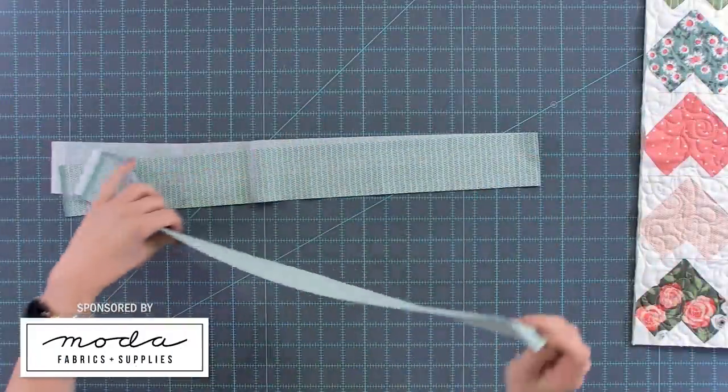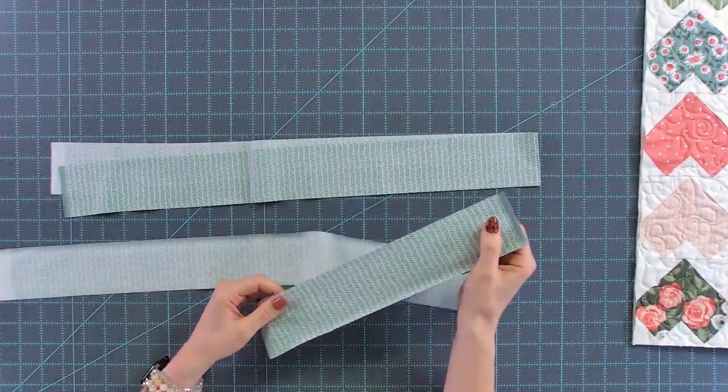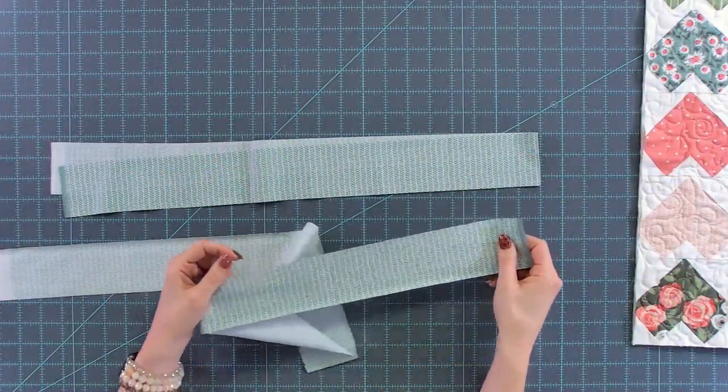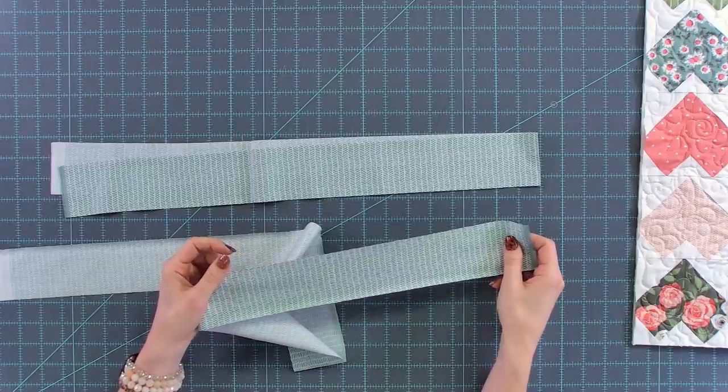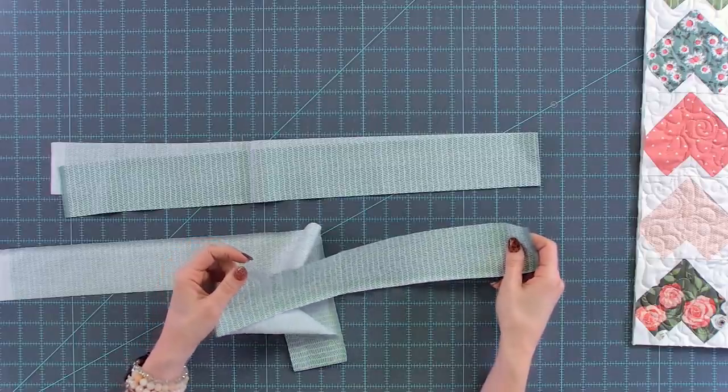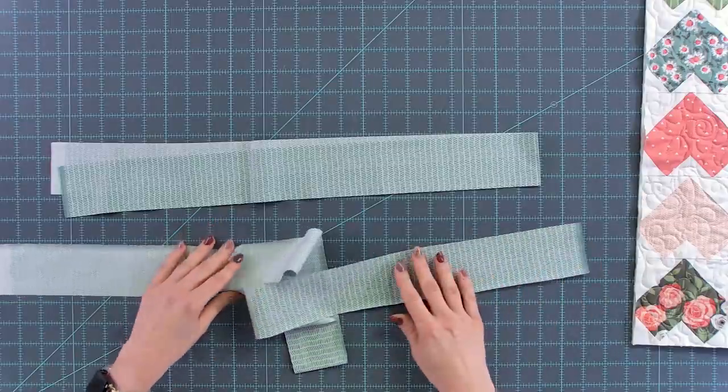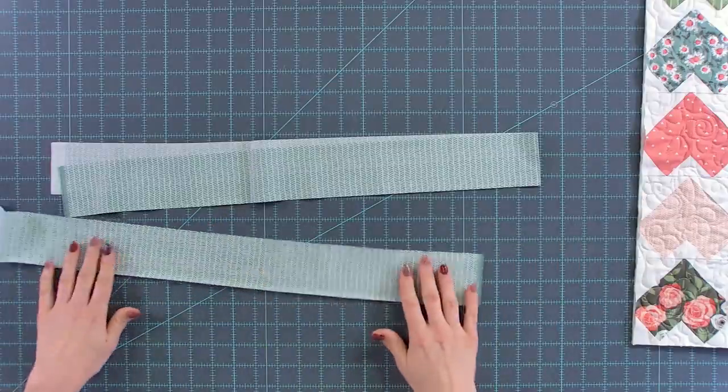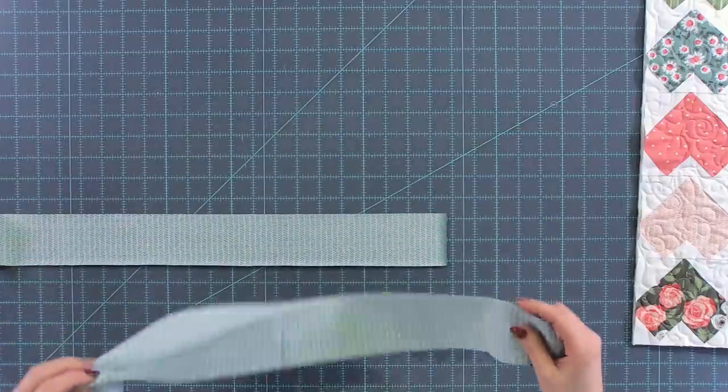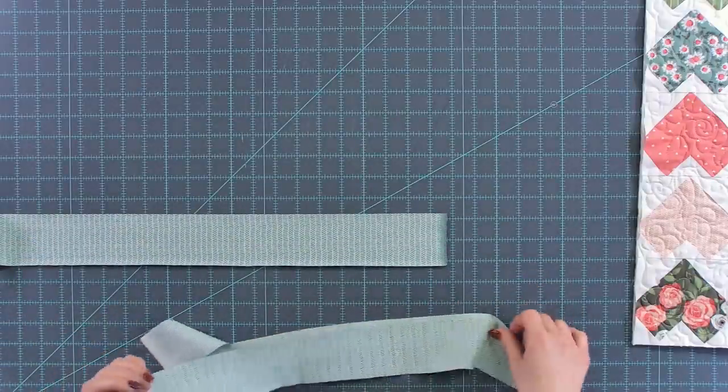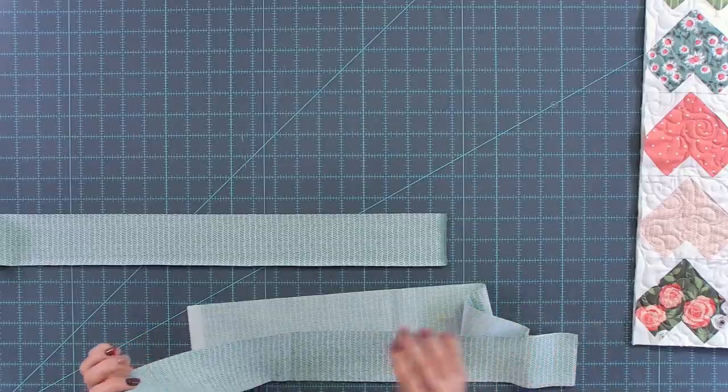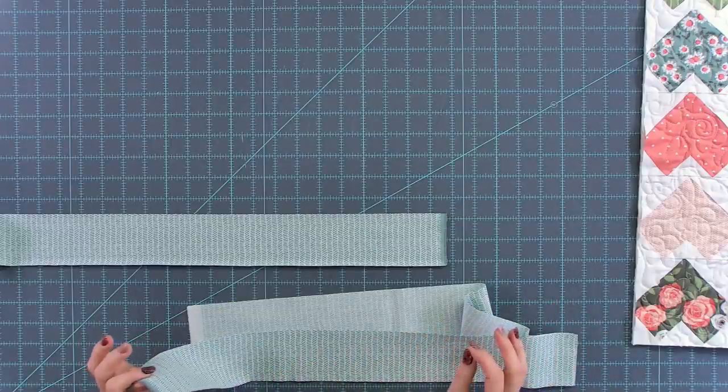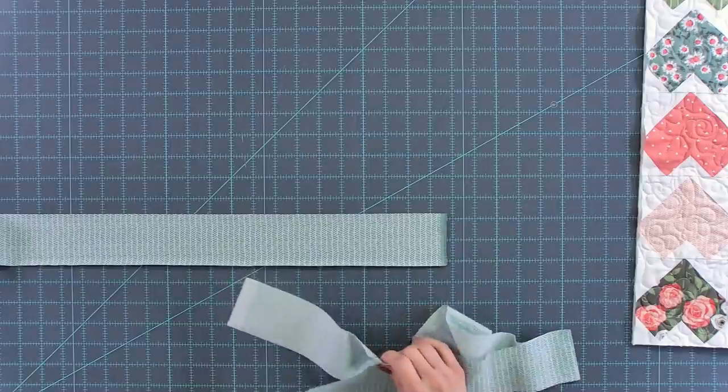Okay, I am starting out with my binding strips. These are two and a half inches wide and for this project I'm using the herringbone print from Lovey Dovey. You are going to want to look at your pattern instructions to know exactly how many binding strips you'll need. For mine I'm going to do three total but the first thing you're going to want to do is connect all of your binding strips continuously so you have one giant strip.